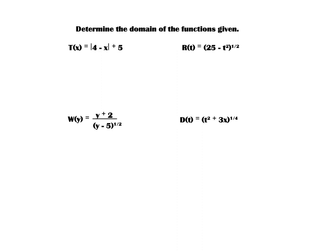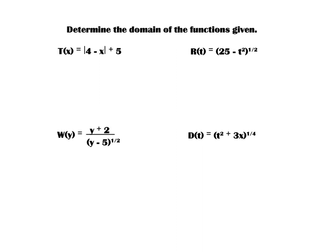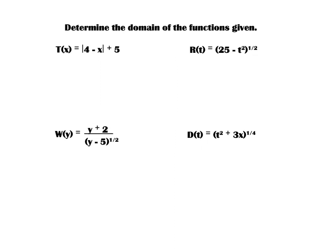For t(x) = |4 − x| + 5, there is no even root and we're not dividing by anything, so there are no restrictions. The domain of t(x) is all real numbers. No absolute value will ever have restrictions on the domain unless it contains rational division or an even root.